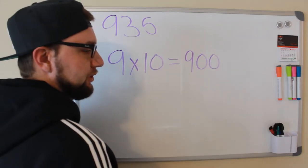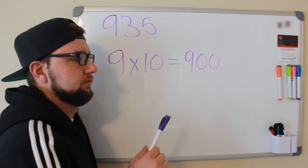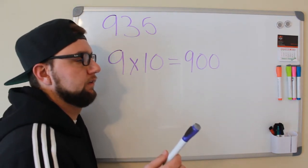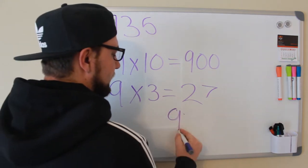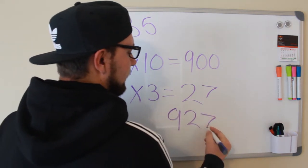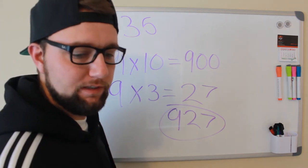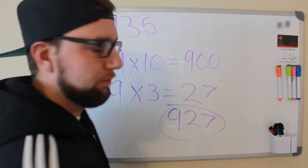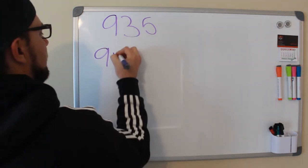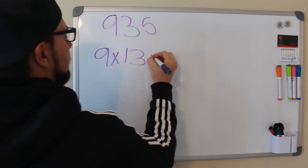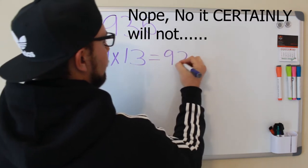So 9 times 10 is obviously going to give me 90... 900. And 9 times 3 is 27 — so we have 9, 18, 27. We have a total of 927, so 9 times 13 is going to give us 927. 13 classrooms we can divide 935 pencils into.